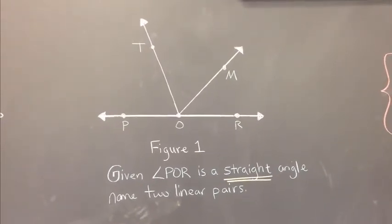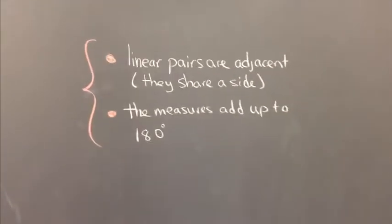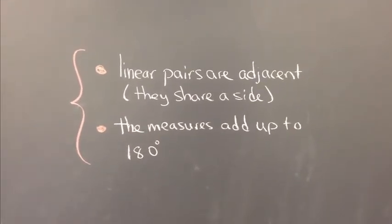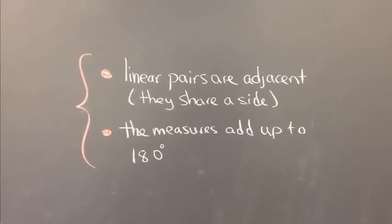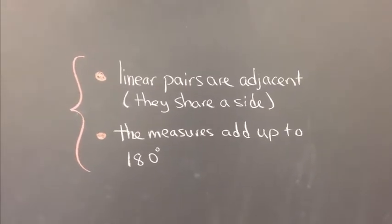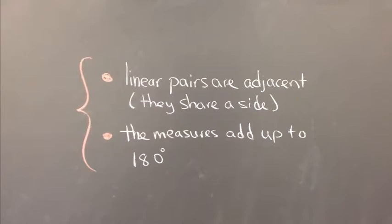Now, there are two things you need to know about linear pairs. Linear pairs are adjacent, meaning they share a side, and their measures add up to 180. They're not individually 180, but they add up to 180.